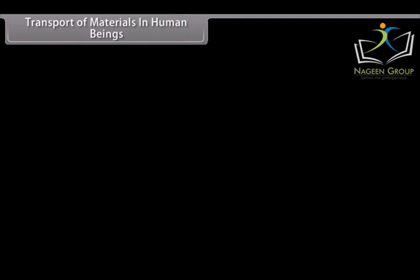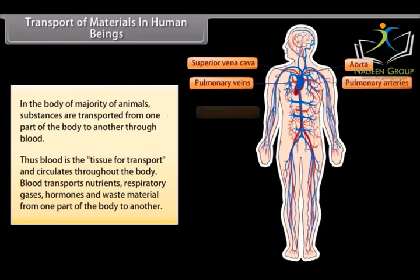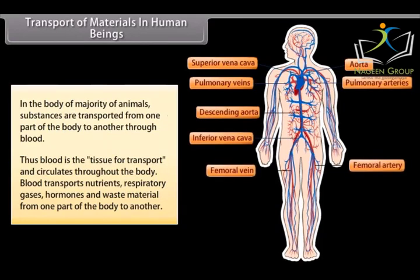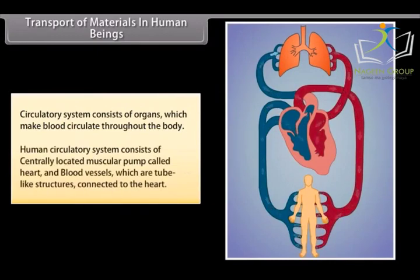Transport of Materials in Human Beings: In the body of majority of animals, substances are transported from one part of the body to another through blood. Thus, blood is the tissue of transport and circulates throughout the body. Blood transports nutrients, respiratory gases, hormones and waste material. Circulatory system consists of organs which make blood circulate throughout the body. Human circulatory system consists of centrally located muscular pump called heart and blood vessels which are tube-like structures connected to the heart.